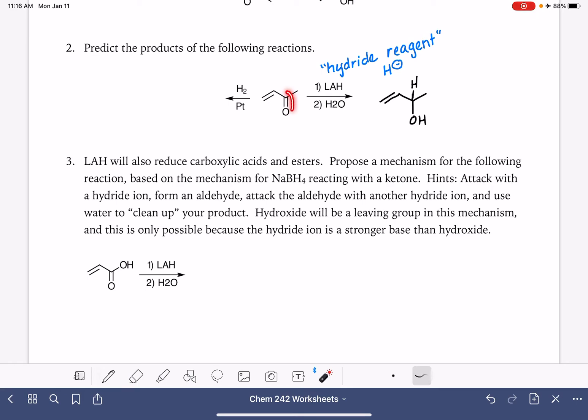We could also perform the exact same conversion by using hydrogen with platinum, palladium, or nickel, the same way that we have been doing with double bonds and triple bonds. One of the disadvantages of using this H2Pt reagent is that it also converts double bonds into single bonds or triple bonds into single bonds as well. So if we are interested in converting a carbon-oxygen double bond to a single bond and we don't care about converting any other double bonds at the same time, this is a great reagent to use. If we want to selectively convert a carbon-oxygen double bond into a single bond, leaving other double bonds alone, the hydride reagent is a great choice.